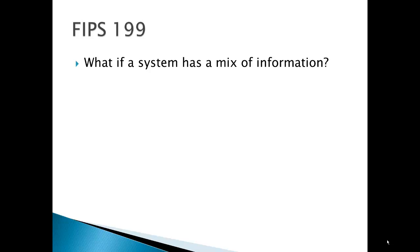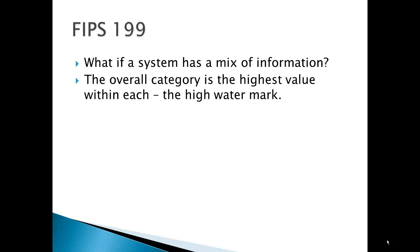What if a system has a mix of information? What if there are different types of information having different impacts on CIA? The overall category is the highest value within C, I, or A — it's the high watermark. So of all the information, the one that provides the most critical confidentiality rating, the most critical integrity, and the most critical availability — that is what the system overall is rated as. It's rated as the most sensitive, most critical information within it.